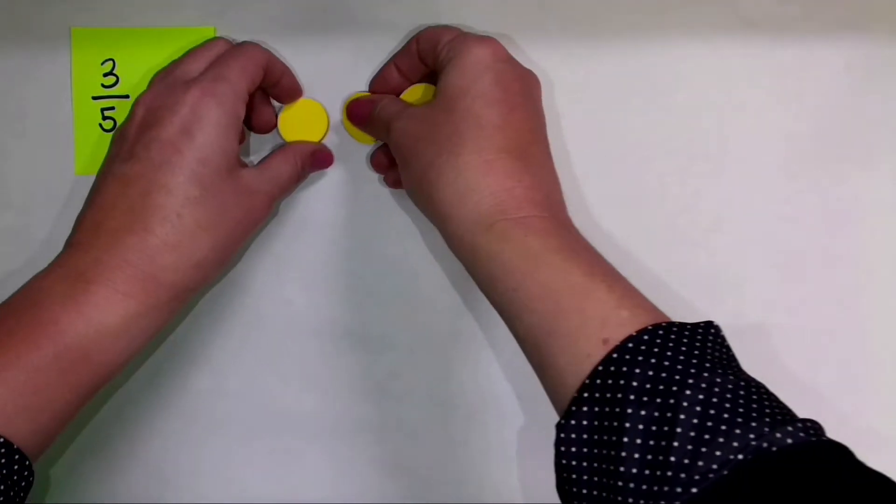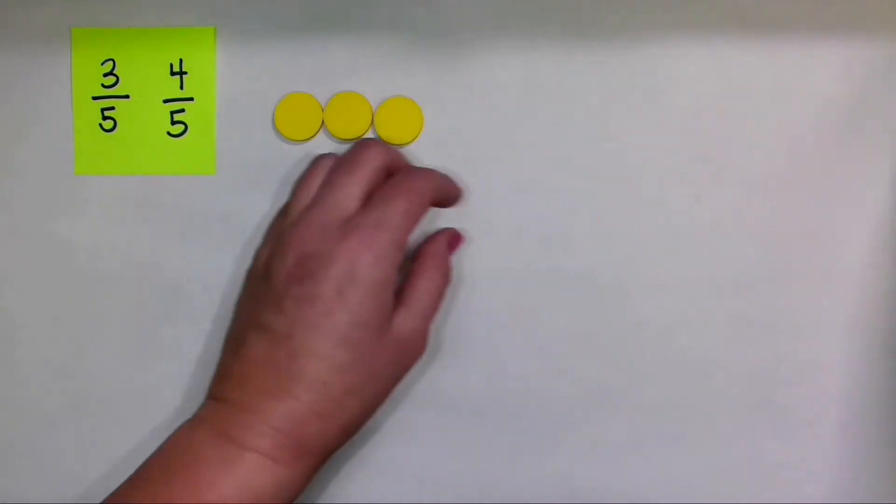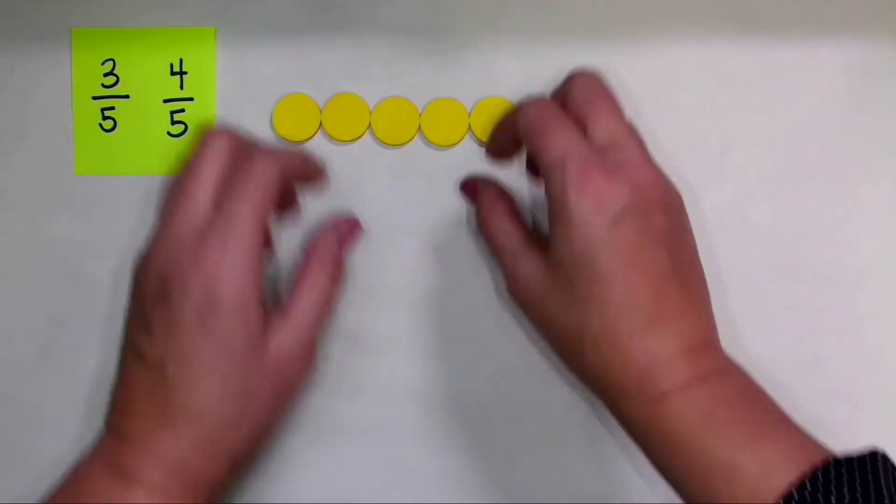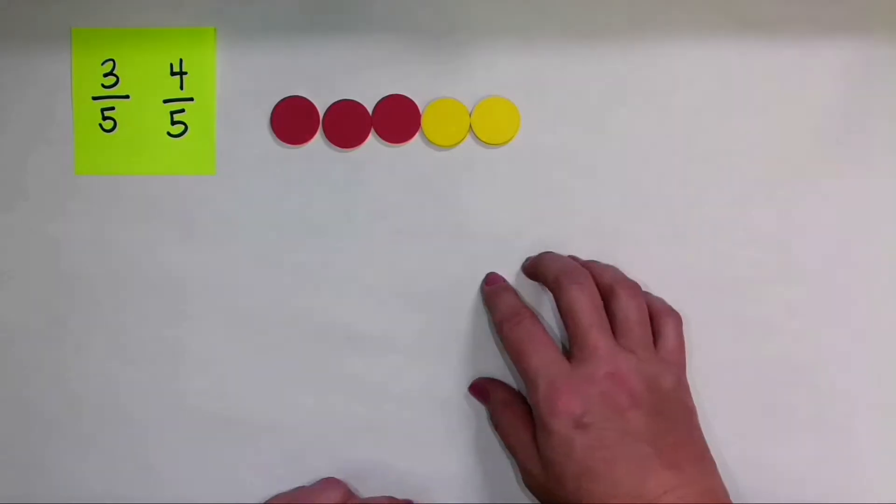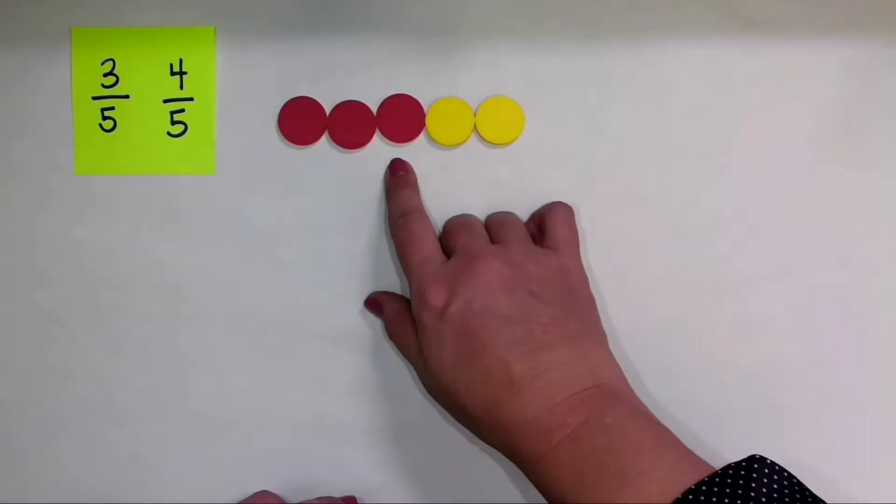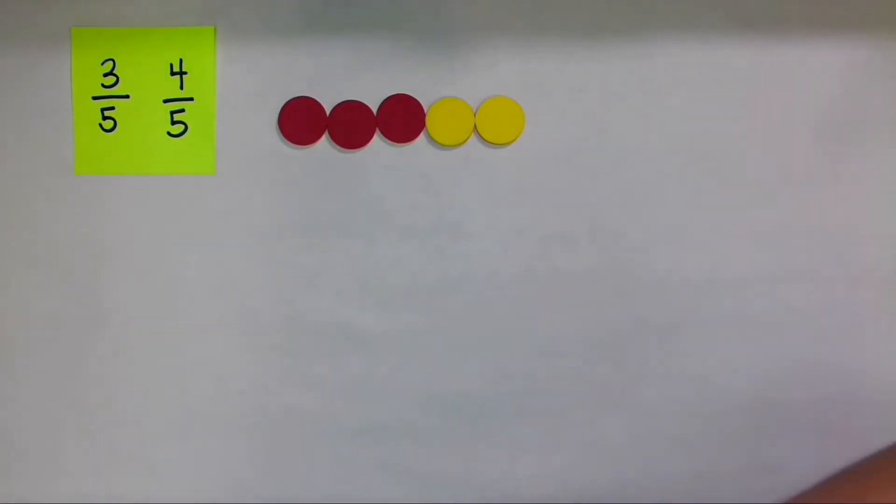Now, to show the fraction 3 fifths, that means I'm going to make a set with five equal pieces. And I'm going to show three of those five pieces. I always like to use the red to show the numerator, and the yellow to represent the holding the place of the denominator.